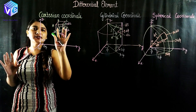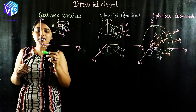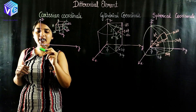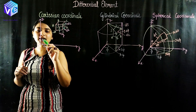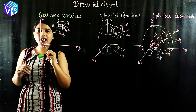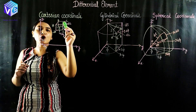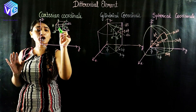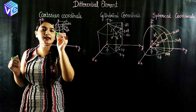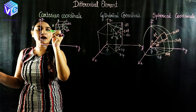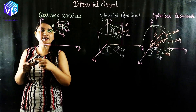We are beginning our discussion with the Cartesian coordinate system. Here we have x, y, and z axes. Along the x axis we have ax unit vector, along y axis we have ay unit vector, and along z axis we have az unit vector. We have a small volume, and the coordinates of point D are x, y, z.